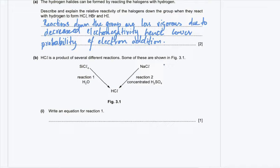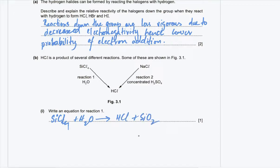Part B: HCl is a product of several reactions shown in figure 3.1. Silicon tetrachloride reacts with water to form HCl; NaCl reacts with concentrated H₂SO₄ to also form HCl. Part B1: write an equation for reaction 1. SiCl₄ reacting with H₂O forms HCl and SiO₂. Balancing gives 4HCl and 2H₂O.